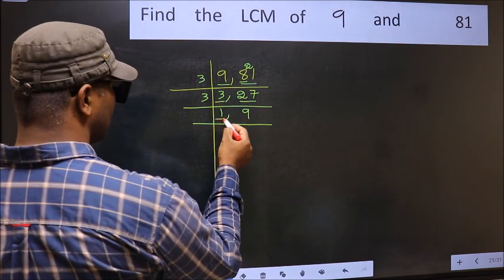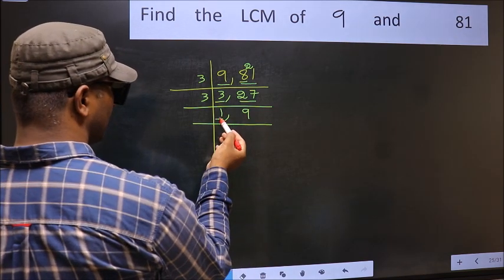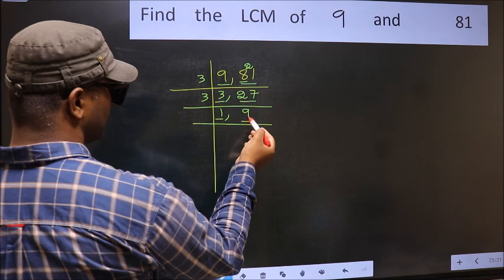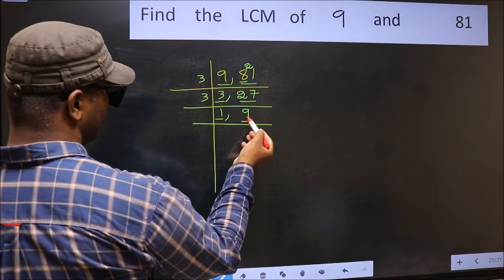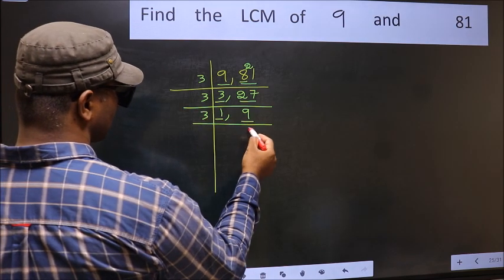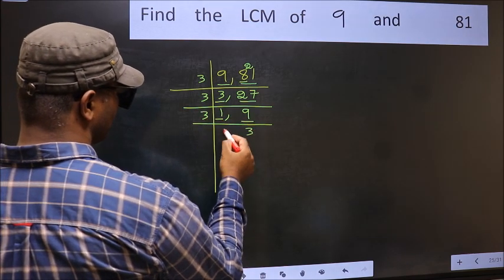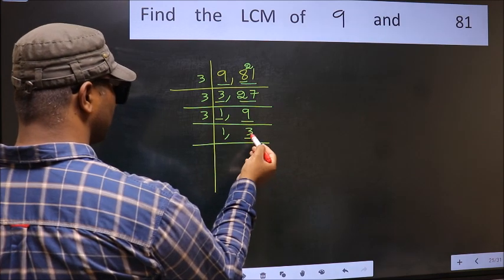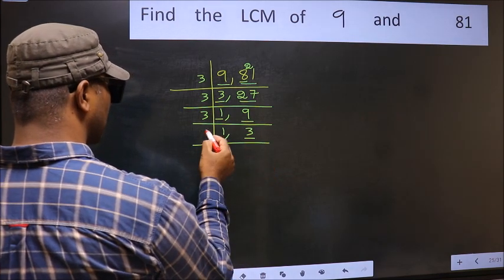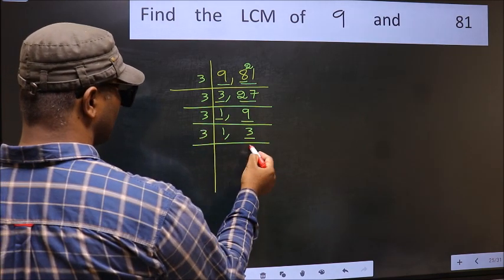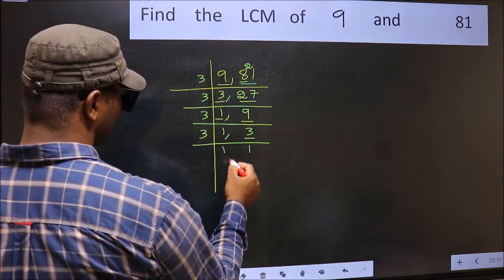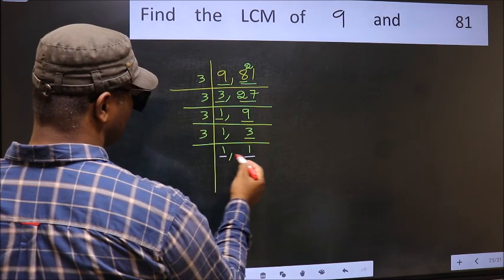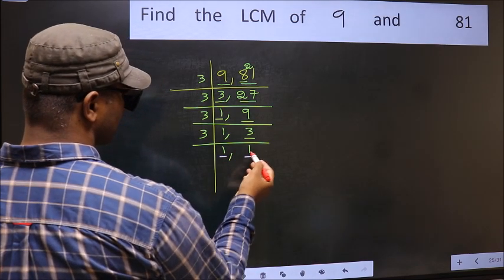Now we got 1 here, so focus on the next number 9. Now 9 is 3 times 3, which is 9. We have 3, which is a prime number, so 3 times 1 is 3. So we got 1 in both places.